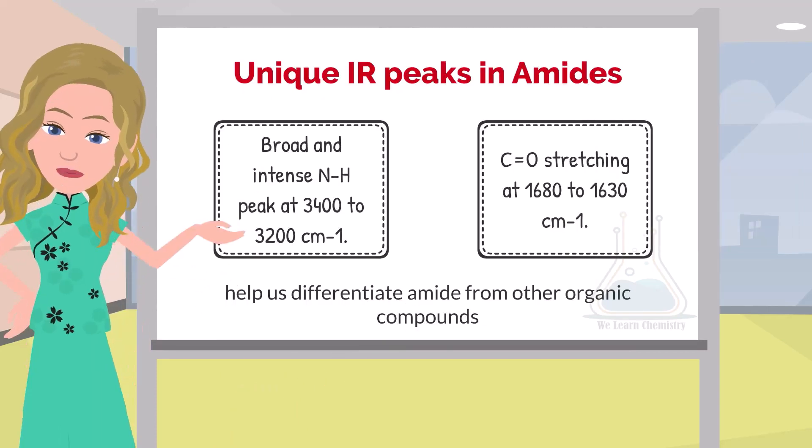with the N-H stretching peak is the perfect combination observed in the IR spectrum when the compound is an amide. This can help us differentiate amide from other organic compounds using IR spectroscopy.